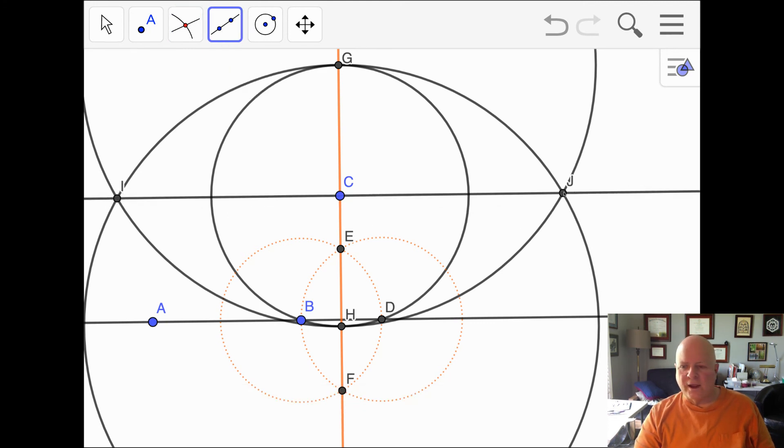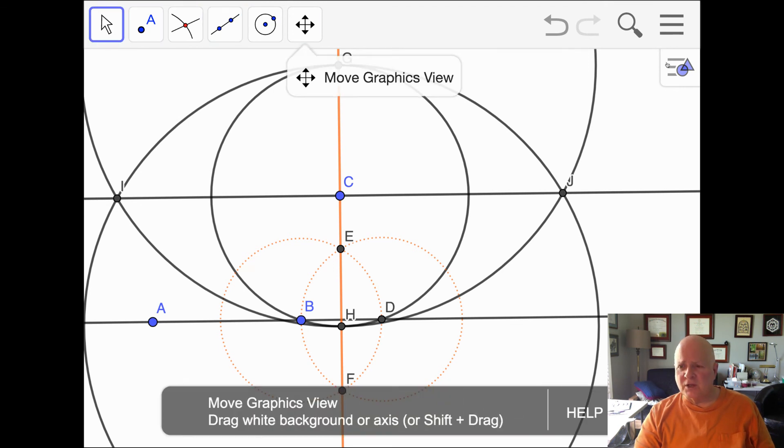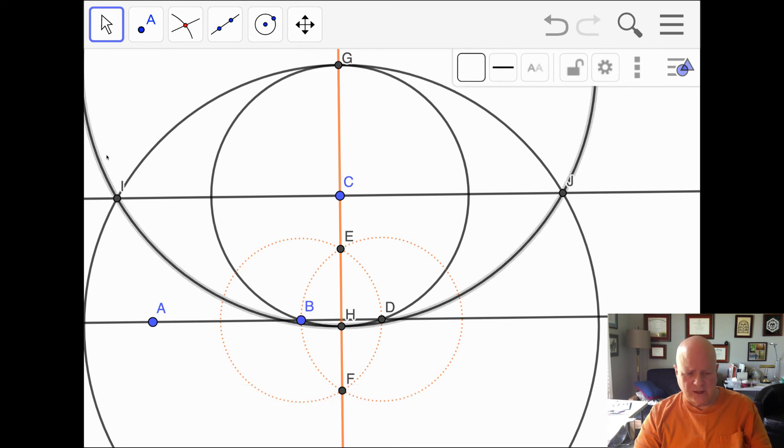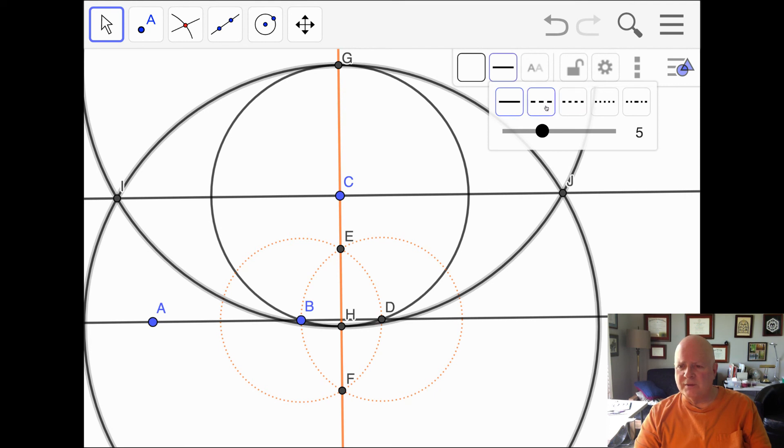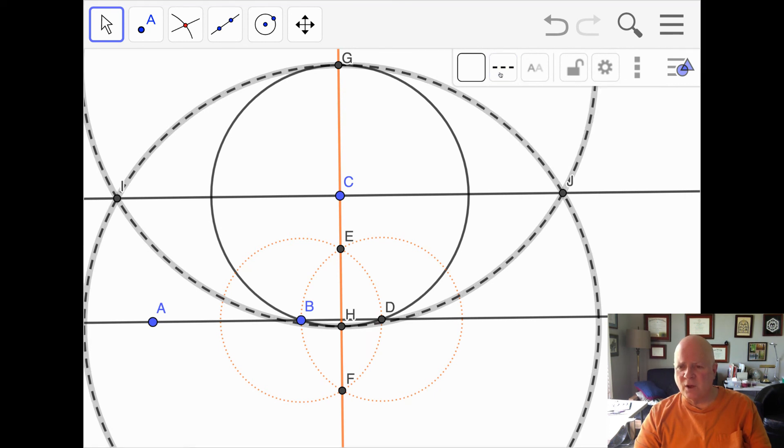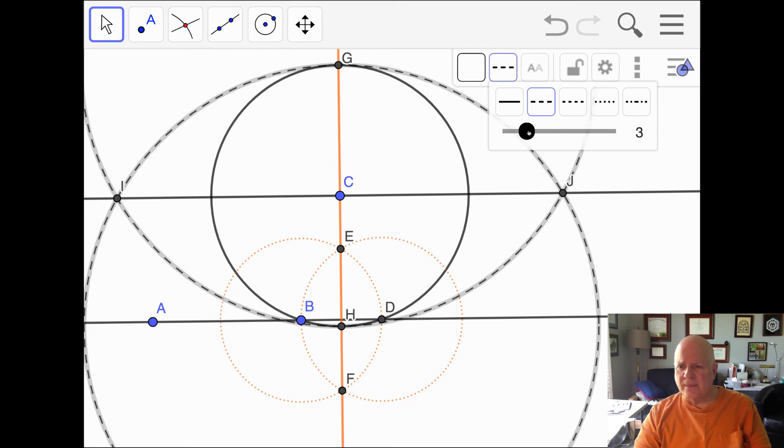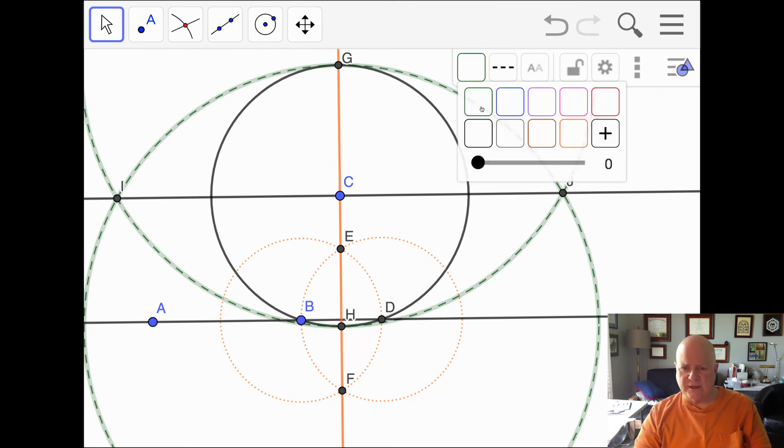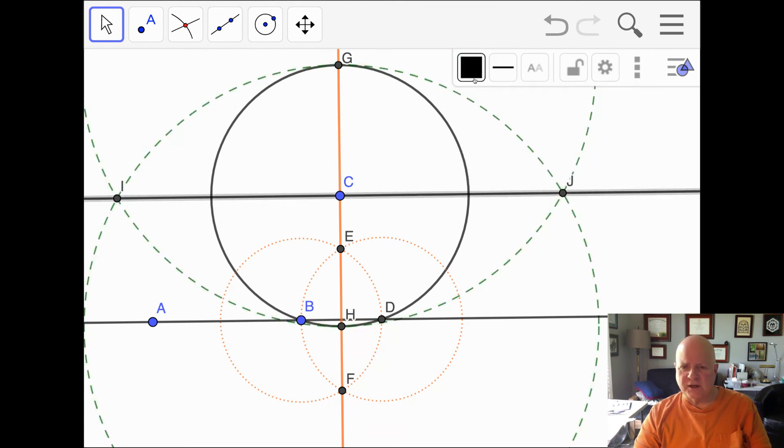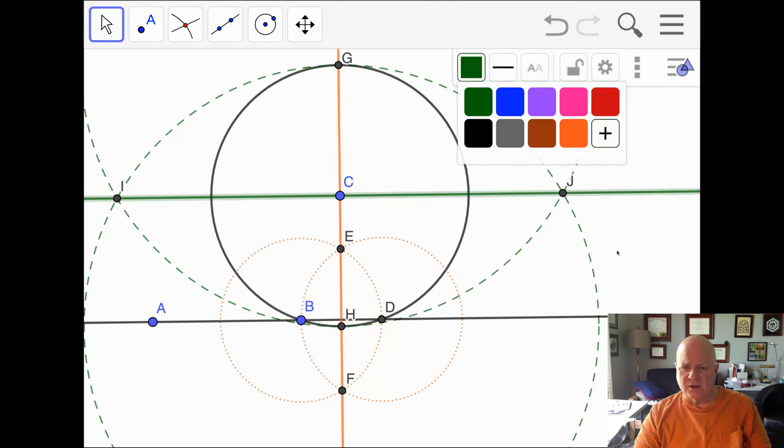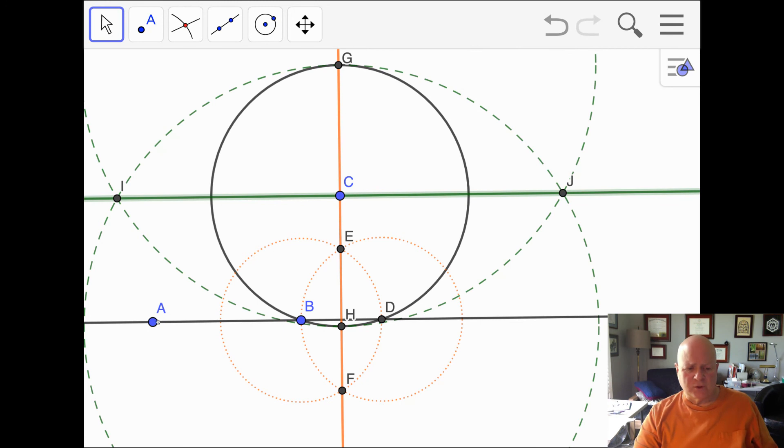Now, maybe I can make this a little clearer by changing the color and changing the style. I'll choose this line and this one, make them dashed and make them a little bit smaller in size and make them green. And you can see this large line here will make this green. So now you can see we have the original line AB.